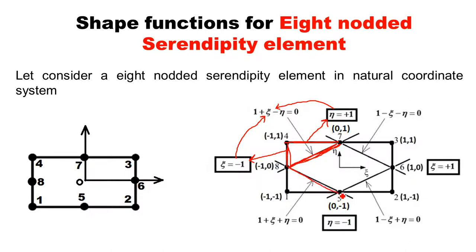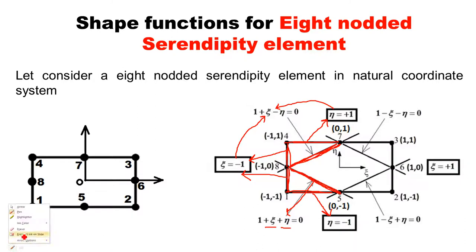For the last inclined line joining nodes 8 and 5: it connects the left vertical edge (xi = −1) and the lower horizontal edge (eta = −1). Both are negative, so their opposite signs are both positive: +xi and +eta. The equation of this line is 1 + xi + eta = 0. Like this, we write down the equations of all four inclined lines.